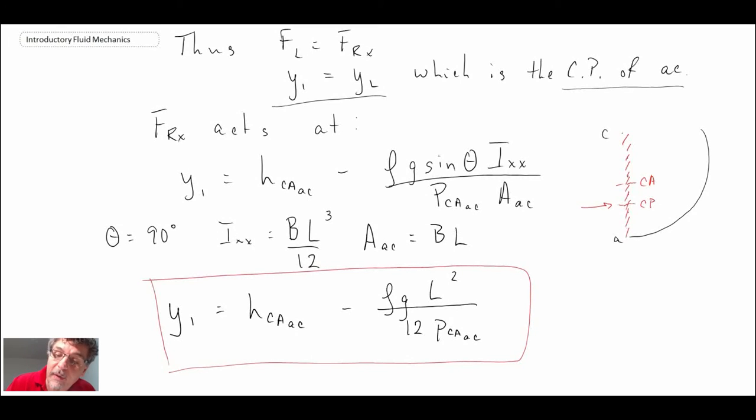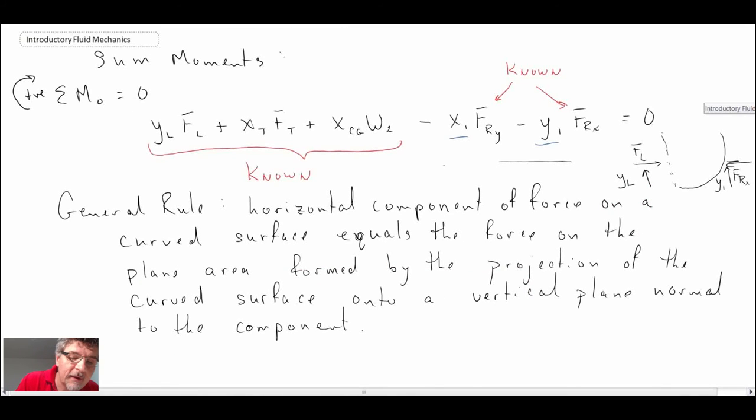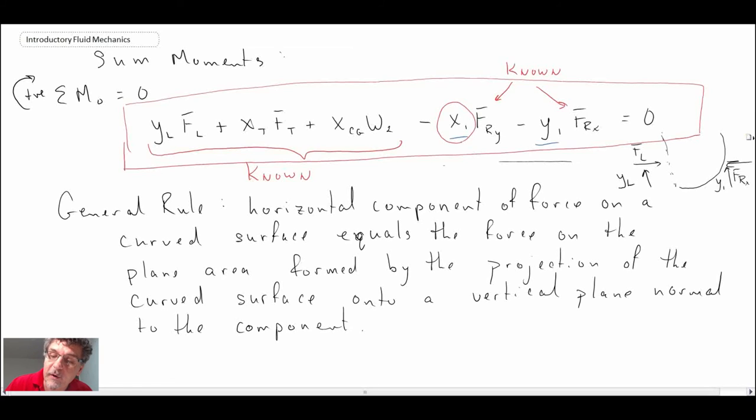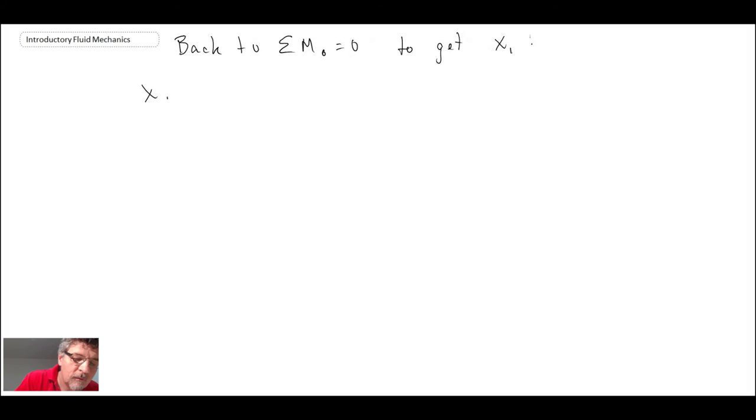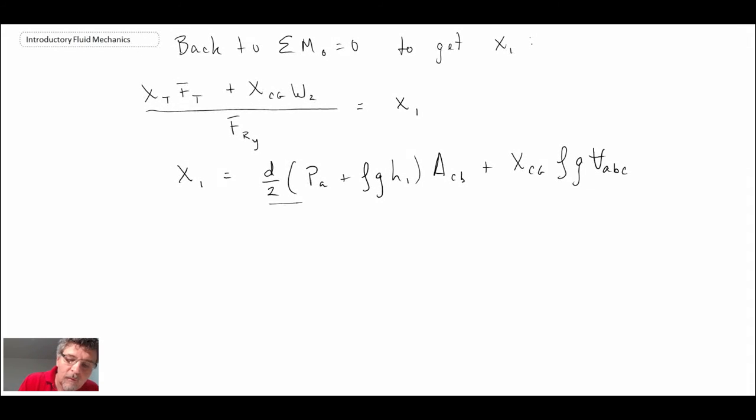Now what we will do is go back to our moment equation, summing of the moments, this equation here. We're going to plug in what we now know in order to try to isolate, and in this case we're going to be trying to isolate X1. So we get the equation for X1 and we plug in the values, and finally we can solve for X1 as being the following.